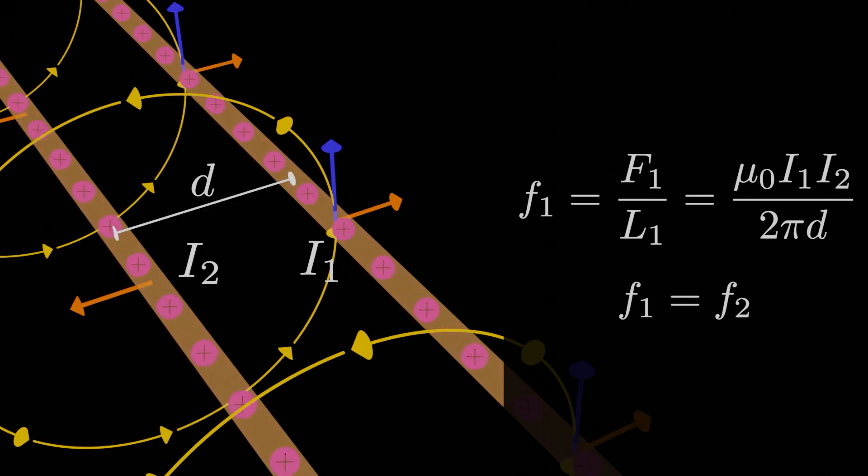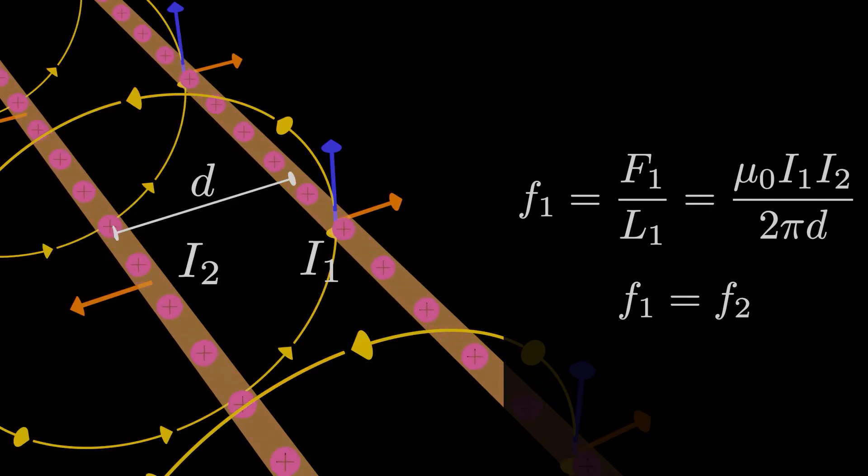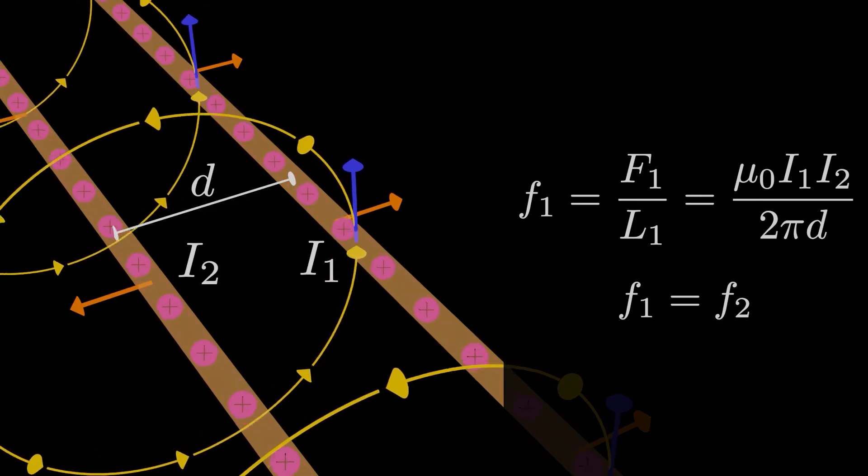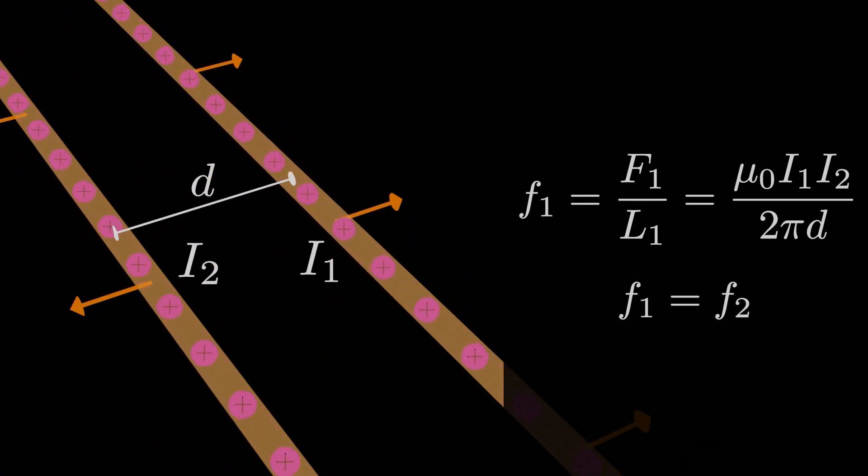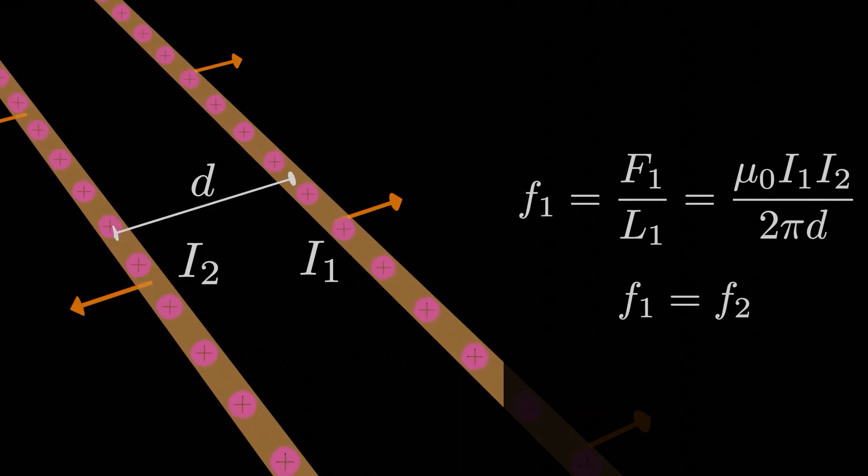That's a fact so convenient in introductory magnetism that it's worth memorizing. When you have two wires which carry currents in the same direction, they attract each other with equal and opposite magnetic forces per unit length. When you have two wires which carry currents in the opposite direction, they repel each other, still with equal and opposite forces per unit length though. In both cases, the magnitude of the force per unit length that each wire feels is given by mu naught i1 i2 over 2 pi d, where d is the perpendicular distance between the wires.